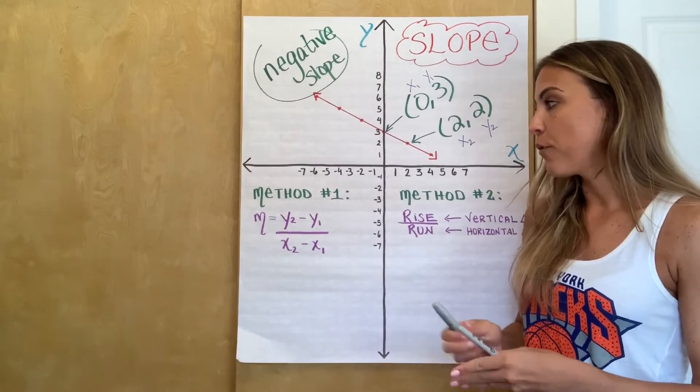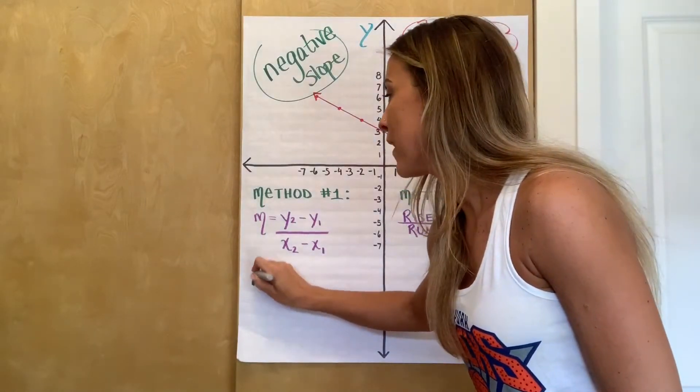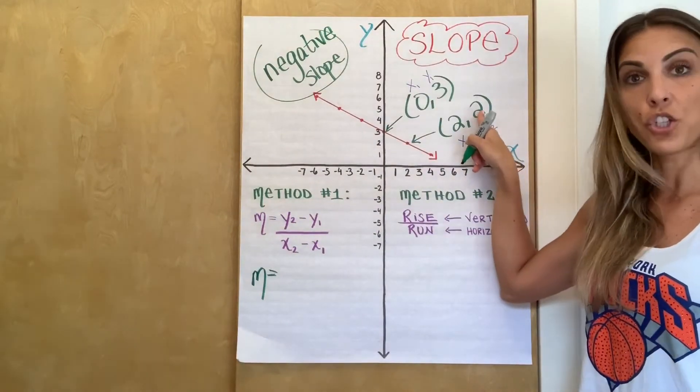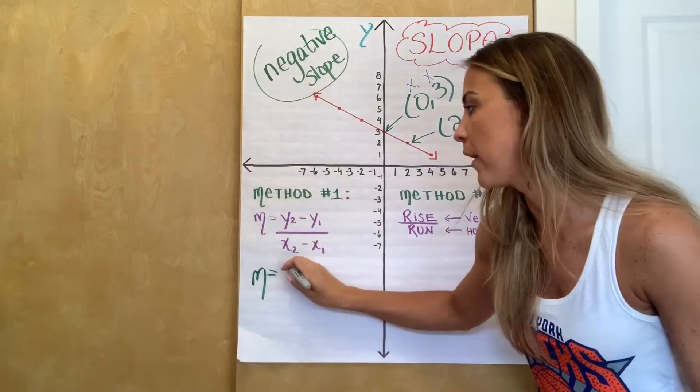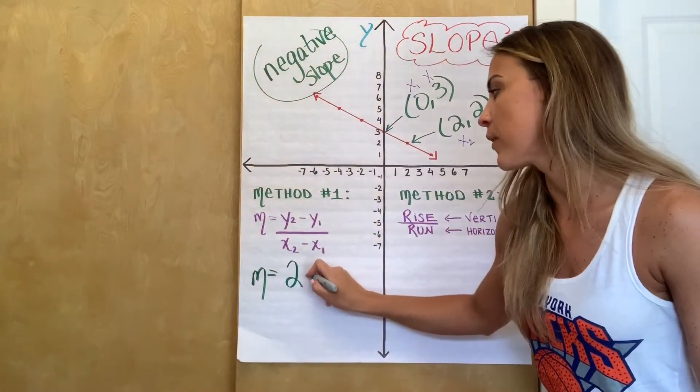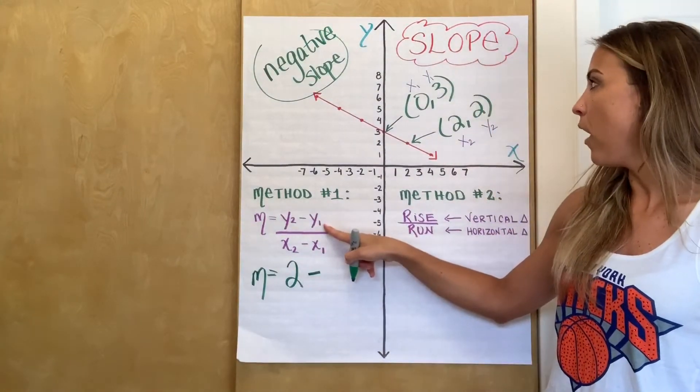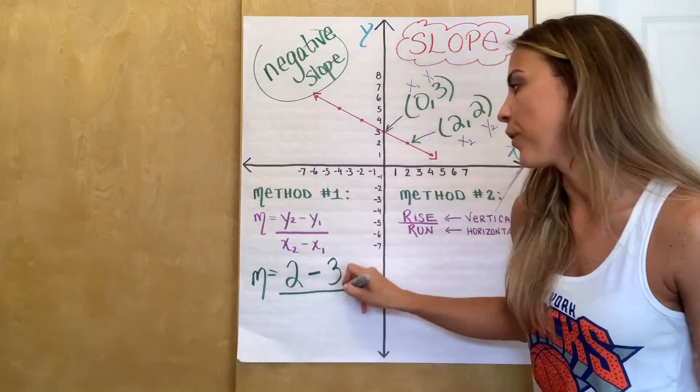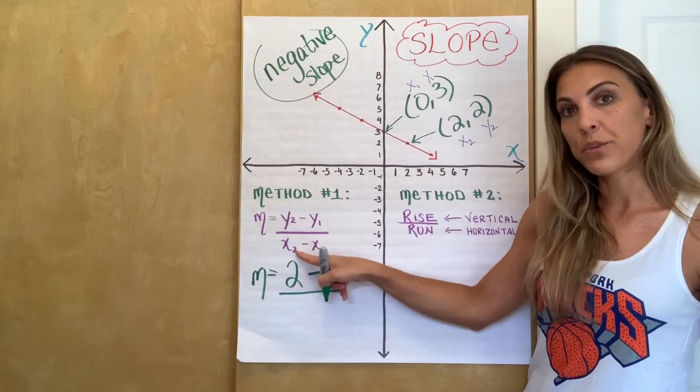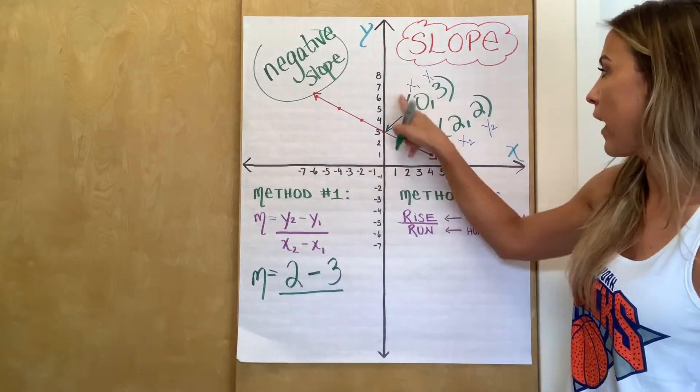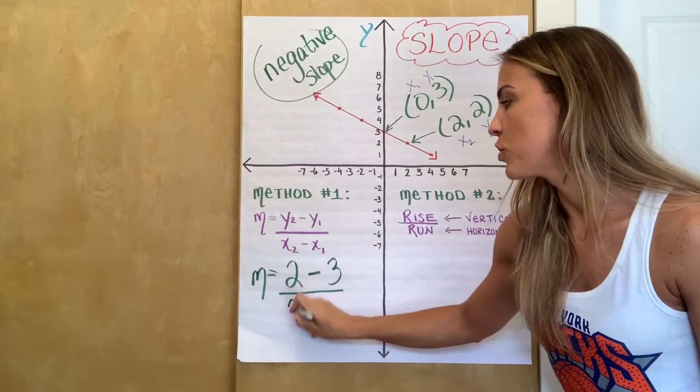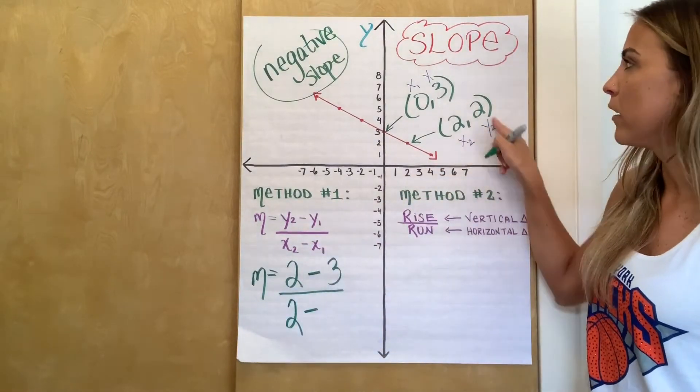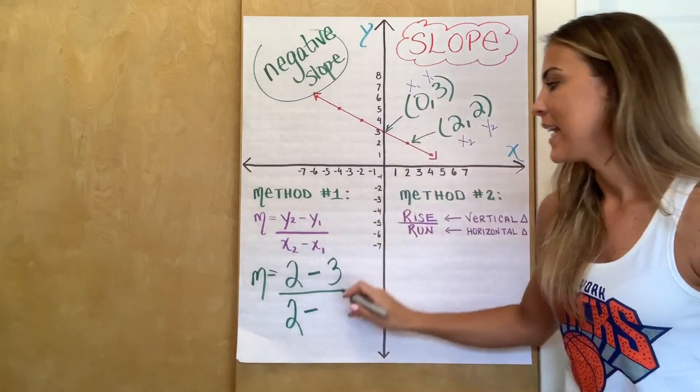So now instead of writing y2, I'm going to substitute y2 with the value that I've labeled as y2, which is 2. So instead of writing y2, we're writing 2. There's a subtraction sign that comes next. So that's coming down. And now y1 will get substituted with 3. So now I have 2 minus 3 over x2, which is going to get substituted with, what did I call x2? 2. So 2, another subtraction sign, x1. What was our x1? If you look up here, our x1 was 0. Okay?